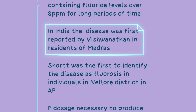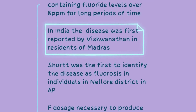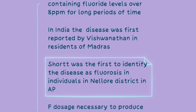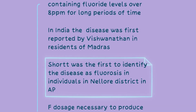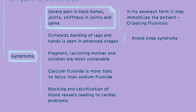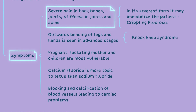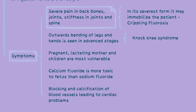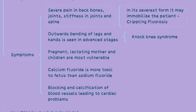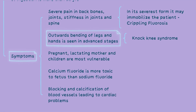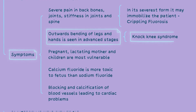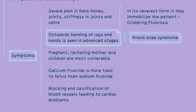The identification of fluorosis as a disease in India can be attributed to the work of Vishwanathan in Madras and Short in Nilur district, Andhra Pradesh. In severe cases of skeletal fluorosis, individuals may experience severe pain in the back bones and joints along with stiffness in the joints and spine. This can result in a condition known as crippling fluorosis. Advanced stage skeletal fluorosis may also cause outward bending of the legs and hands, known as knock knee syndrome.